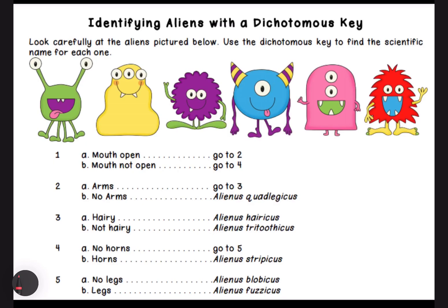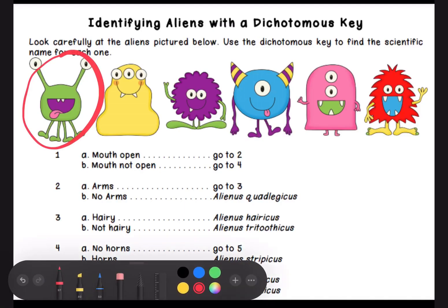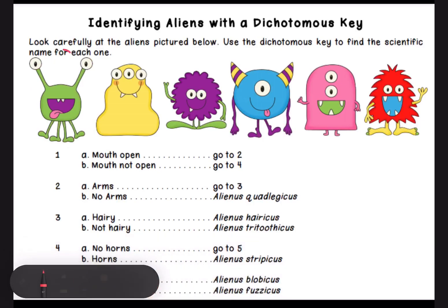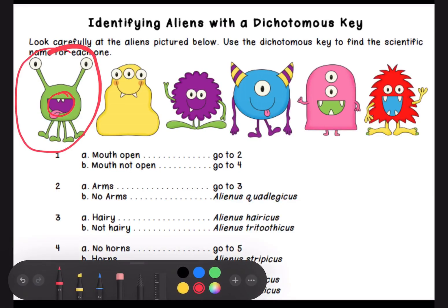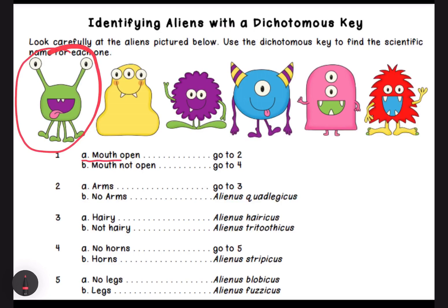We are going to practice how to use the dichotomous key to figure out what the name is for this monster that I have circled here. We look at question number one and think: is the mouth open on this monster? Yes or no? I see that the mouth is open on this monster, so that means I am going to look here.